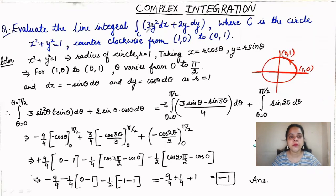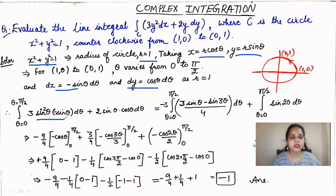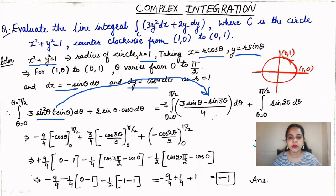Similarly, for the next question of the same type — the circle x² + y² = 1 in the anticlockwise direction, radius 1 — we make the same substitution x = cos θ, y = sin θ and substitute dx and dy. The equation becomes -3 sin³θ · sin θ dθ + 2 sin θ cos θ. For sin³θ, we use the identity (3 sin θ - sin 3θ)/4. Using normal integral rules, the answer equals -1.